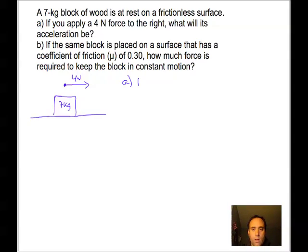In the first part, the equation we're using is F_net equals mass times acceleration. We know that the net force on this block is 4. There's no friction, so there's no other forces. So 4 N equals the mass, which is 7 kg, times acceleration, which is the unknown.